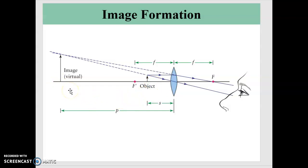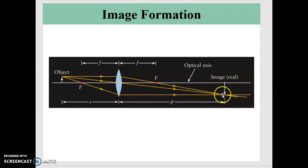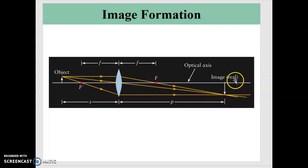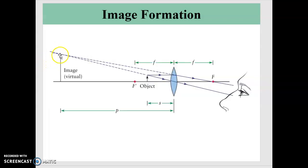We now have two classes of images: real images and virtual images. Real images are formed when the actual physical beams refracted through the lens physically meet — when those beams actually cross where the image is. If the beams appear to come from a point but actually diverge, that is a virtual image. This is the idea behind the magnifying glass.